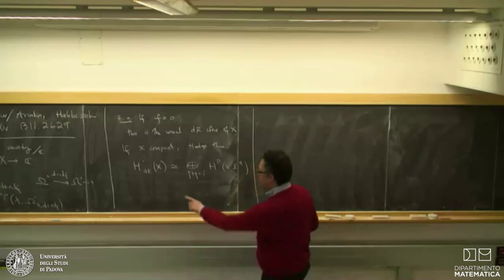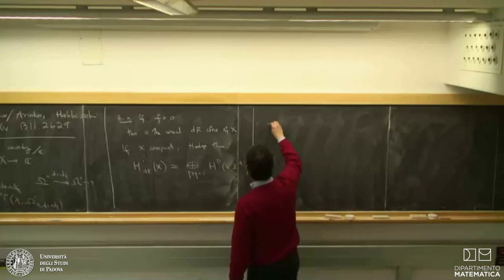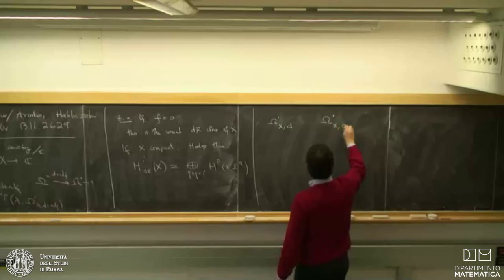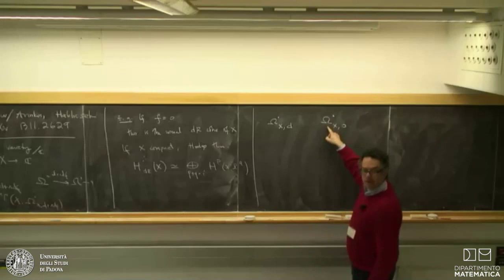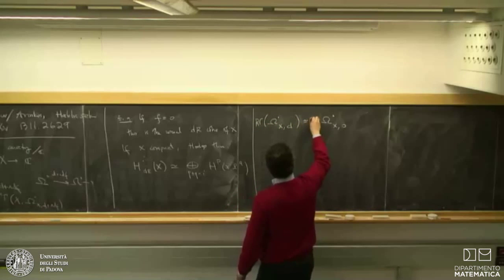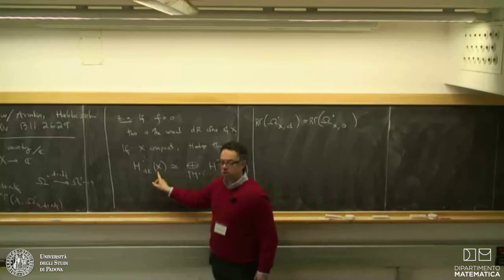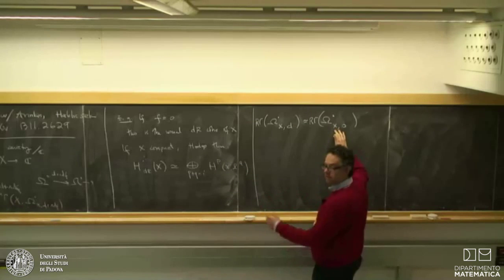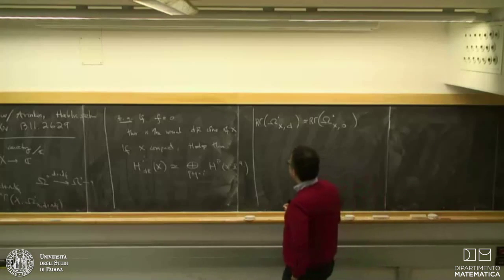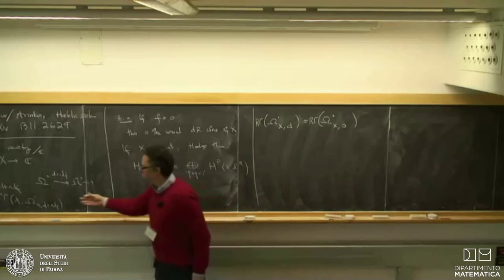Another way of writing this theorem is that we have two complexes. One is omega dot of X with differential d, and another is omega dot of X with differential zero — meaning you put Ω^i in position i but with zero differential. The Hodge theorem can be stated as saying those two complexes have the same hypercohomology. So somehow you can get rid of the d and at the level of hypercohomology you're not losing anything.